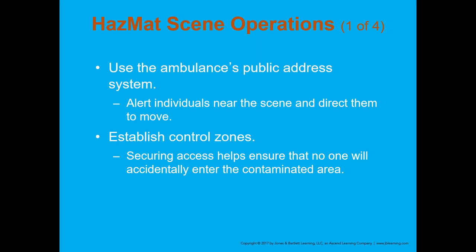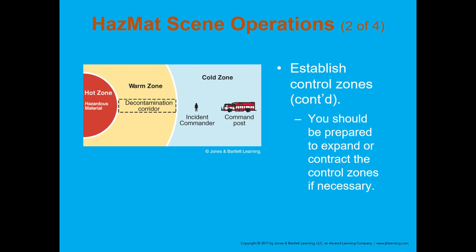Established control zones: securing access helps ensure that no one will accidentally enter the contaminated area. There are three different control zones — hot zone, warm zone, and cold zone. The hot zone is where that hazardous material actually is — if it's a vapor cloud, it's wherever that vapor cloud is. The warm zone is the decontamination corridor, where you will be decontaminated before leaving the hot zone. The cold zone is where everything else is going to be — that's the safe zone where the incident commander, command post, treatment area, and transport area will be set up.